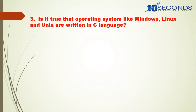Is it true that operating systems like Windows, Linux, and Unix are written in C? Yes — Windows, Linux, and Unix are all written in C. You may wonder about the difference between Unix and Linux: Unix is command-based while Linux is GUI-based.